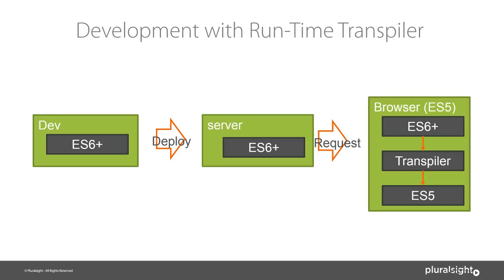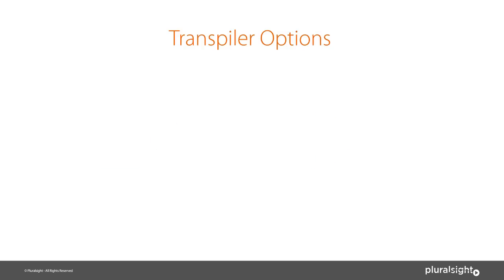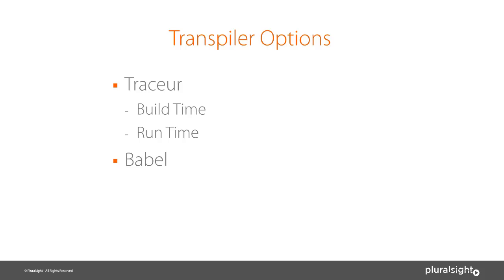With Angular 2, you can use a transpiler or not. Traceur is a transpiler built by Google and is the most popular transpiler out there — you can use it in build-time or runtime mode. In our demo today, we'll use runtime mode because it's a bit simpler. There's also Babel, formerly called 6to5, which also works with ES7 features. TypeScript is becoming more and more popular, and the Angular team has teamed up with the TypeScript team, so you'll see a lot of Angular 2 code using TypeScript.